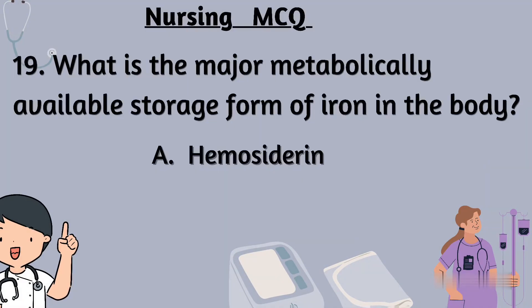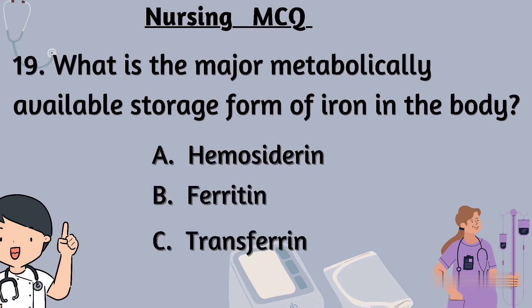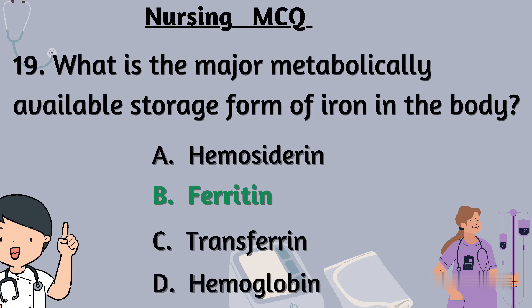Question number 19: What is the major metabolically available storage form of iron in the body? Option A: hemocytopenia, Option B: ferritin, Option C: transferrin, Option D: hemoglobin. The right answer is Option B: ferritin.